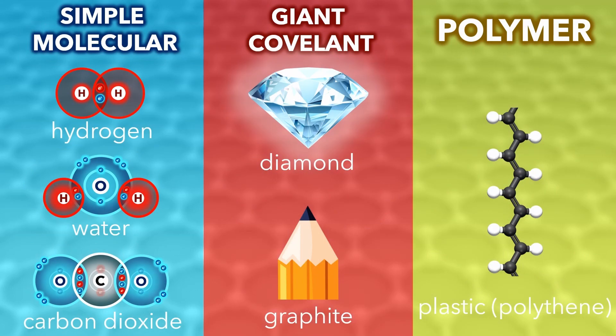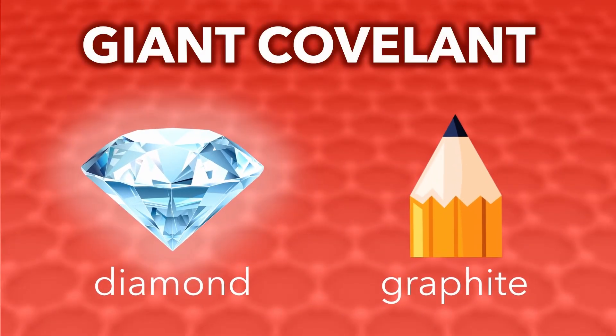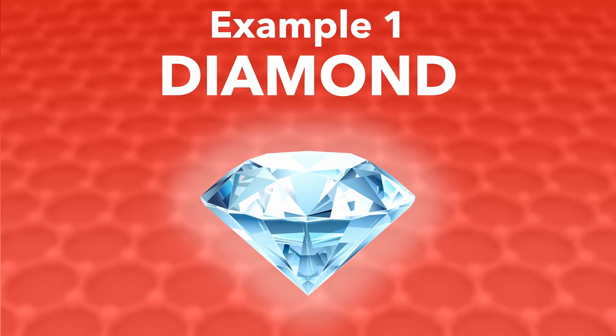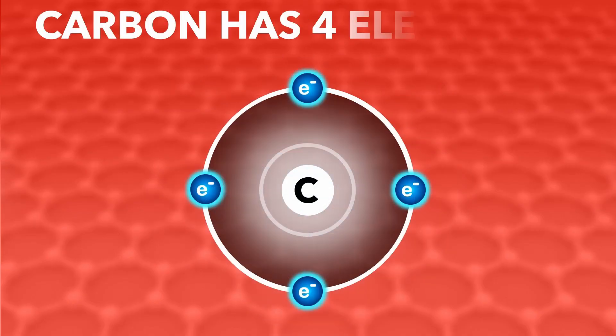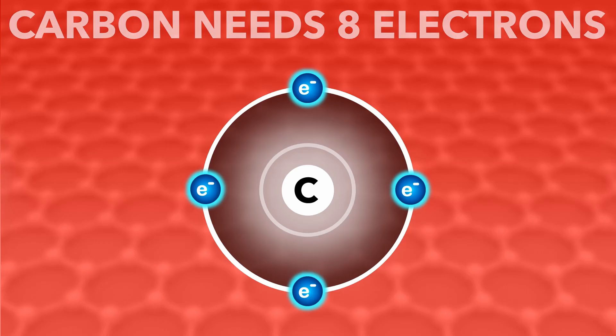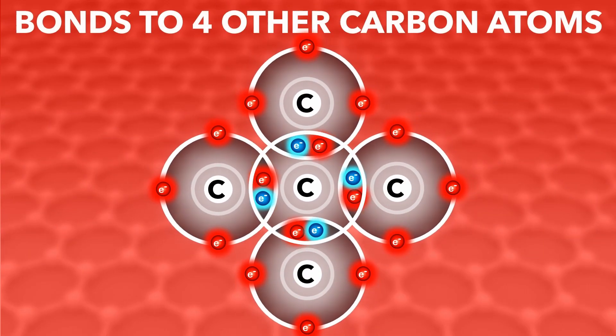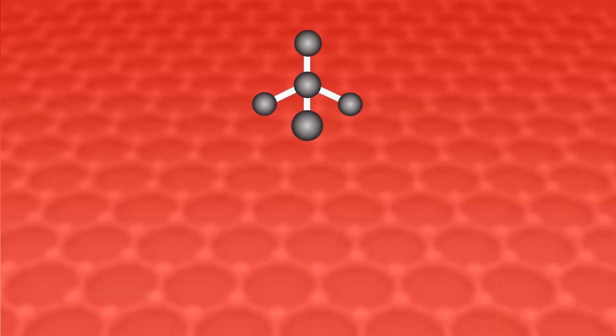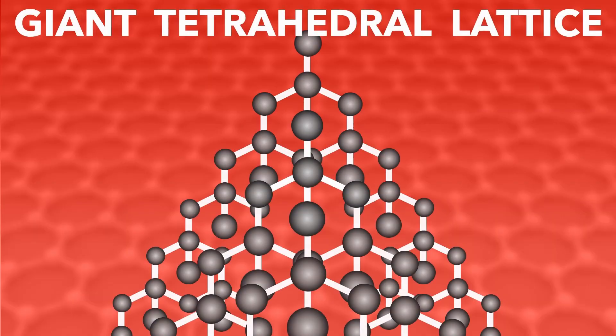The second type of covalent substance is a giant covalent compound. Instead of small molecules, these form big repeating structures called a giant lattice. The first example is diamond. It's made of carbon atoms, which has four electrons in its outer shell, but needs eight for a full shell. So it bonds to four other carbon atoms to get a full outer shell. Every other carbon does the same, forming a giant tetrahedral lattice structure.